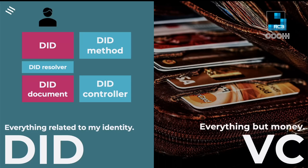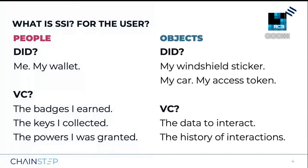What is SSI for the user? Let's distinguish between two scenarios. One that you likely find when you search for SSI on the internet is using SSI to identify a person — the DID in this case is simply me, or rather my wallet. Verifiable credentials can be described as follows: first, there are the badges I earned — proof that I did certain things, such as getting a degree, attending a conference, or running up a hill twice within a certain time limit. Then there are the keys I collected — keys that unlock information I can access or share, for example with digital services, or keys to unlock my vehicle with my mobile.